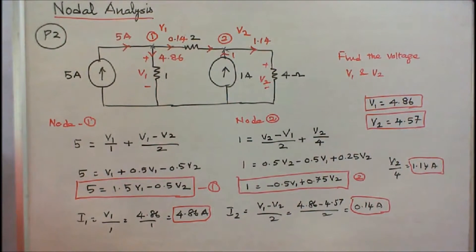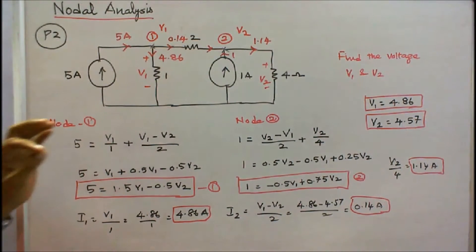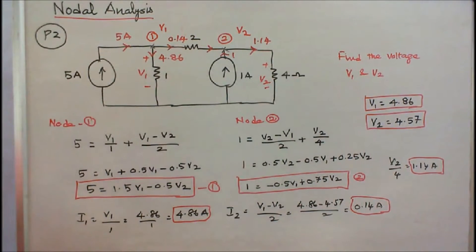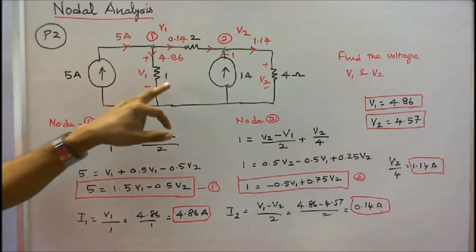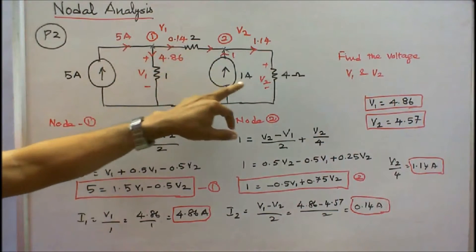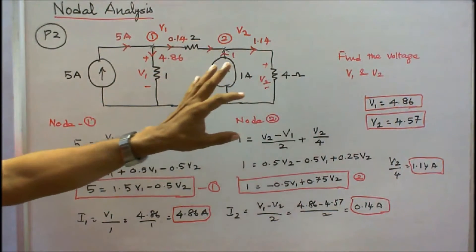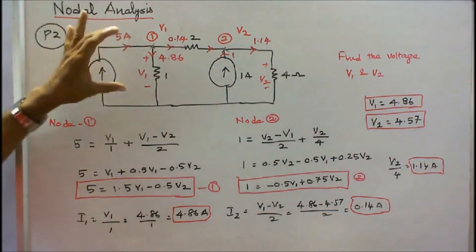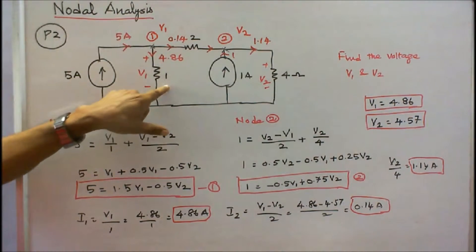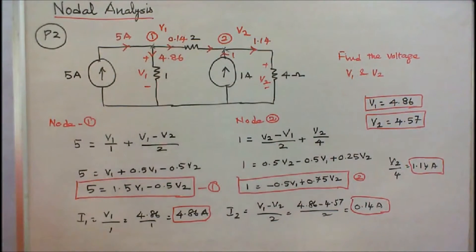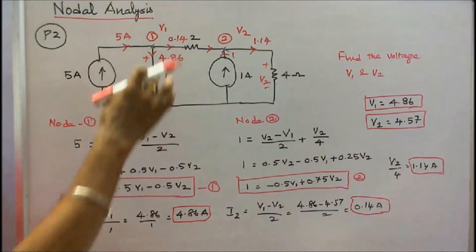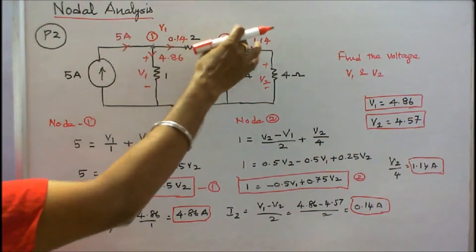Problem number 2. Three resistors and two current sources are connected as shown in the figure. The circuit has a 5 amp source, 1 ohm, 2 ohm, 1 amp source, and 4 ohm resistor. Find V1 — the voltage across the 1 ohm resistor — and V2, the voltage across the 4 ohm resistor. There are two nodes: node 1 with voltage V1, and node 2 with voltage V2.